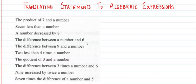The first one is the product of 7 and a number. Product means multiplication. So it will be 7y.